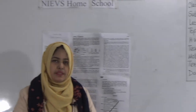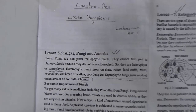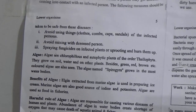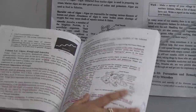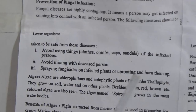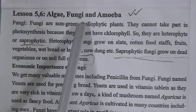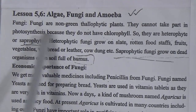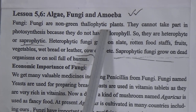So dear students, let's begin today's class. Here is Lesson 5 and 6 from your science book, page number 4. The topic is algae, fungi, and amoeba. Fungi are non-green thallophytic plants. Thallophytic means we cannot divide them into leaf, root, or stem.